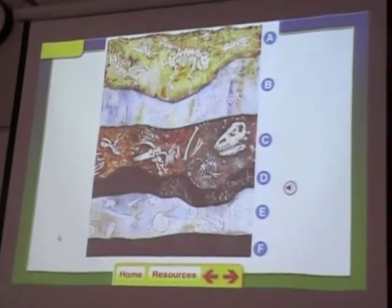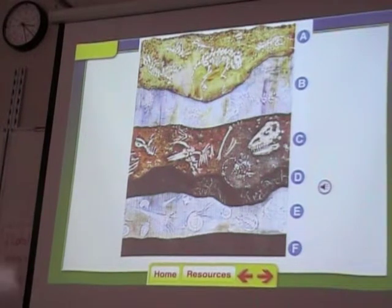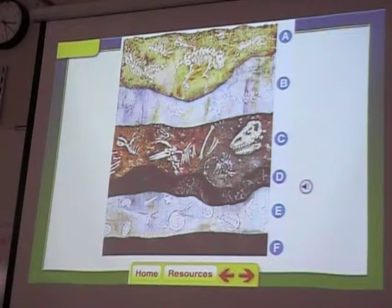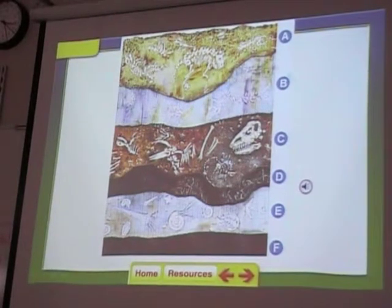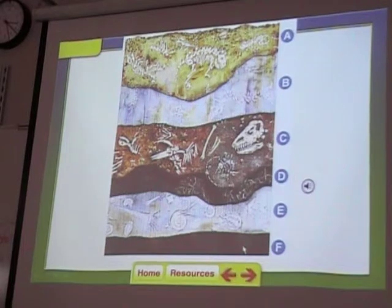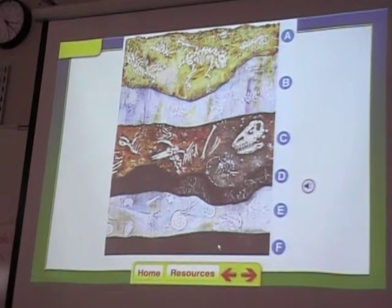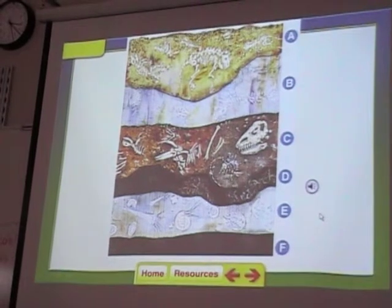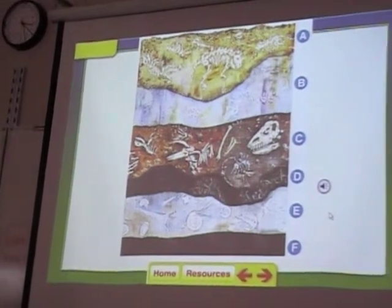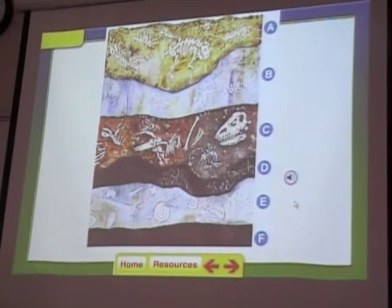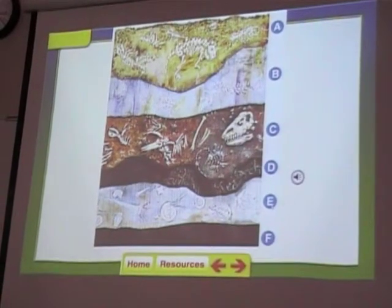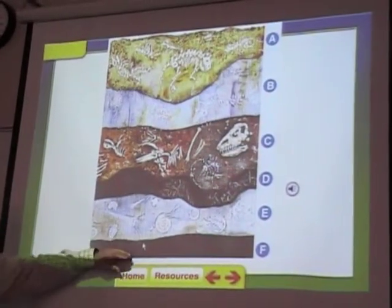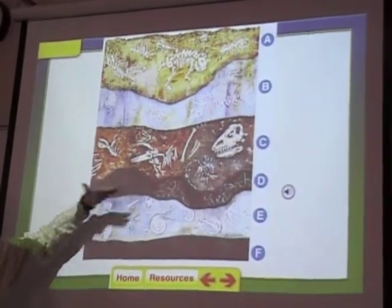Here we see some layers of fossils. The oldest ones are on the bottom and the youngest ones are on the top — so A is the youngest and F is the oldest. Relative dating is a method used to determine the age of rocks by comparing them with younger and older rock layers. The rocks on the bottom must be older because of the way they relate.